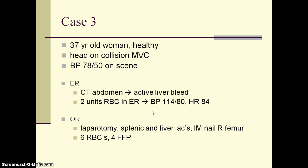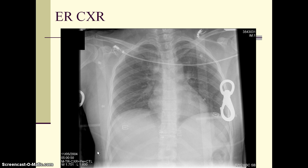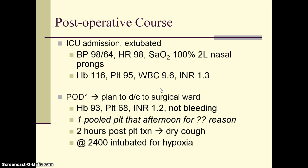Case 3: a 37-year-old woman who was previously healthy was involved in a head-on motor vehicle collision. She was hypotensive on scene and on arrival to the ER. CT abdomen showed an active liver bleed. She received two units of uncross-matched red cells in the ER with improvement in blood pressure and heart rate stabilization. She was moved to the OR for emergency laparotomy, receiving six more red cells and four units of plasma. Post-operatively, she was admitted to the ICU and then extubated. Her pre-transfusion chest x-ray was clear.